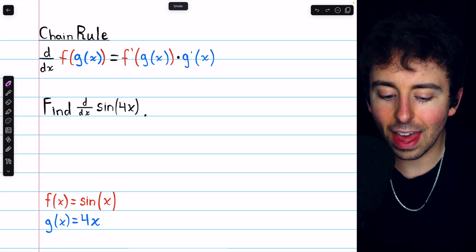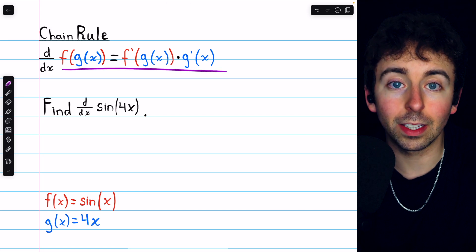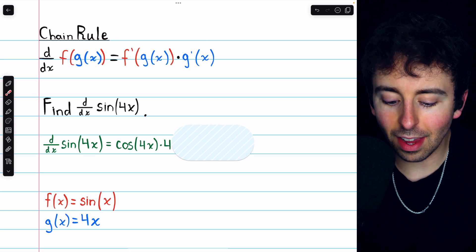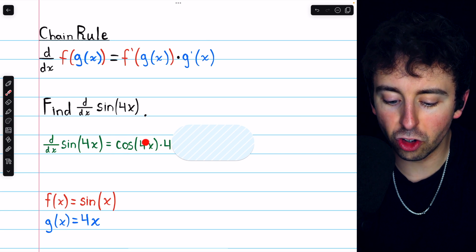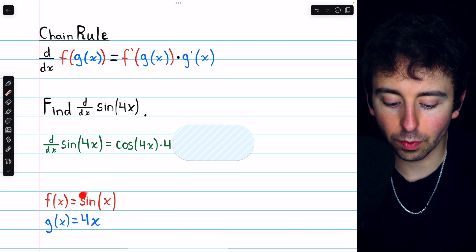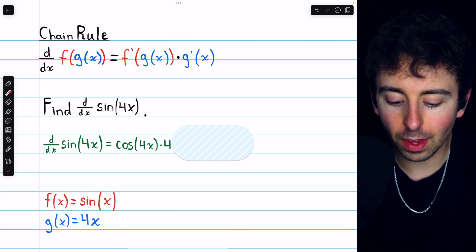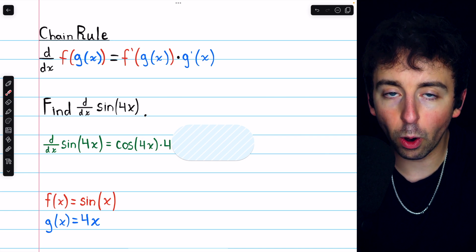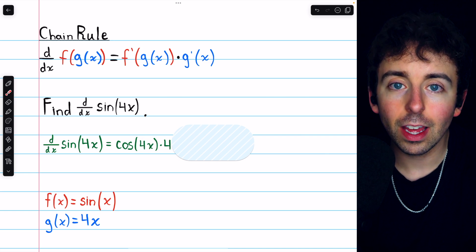Having identified that, applying the chain rule is straightforward. So the derivative of sine of 4x is f prime of g. That's the derivative of the outside function, the derivative of sine, which is cosine, leaving the inside function, g of x, which in this case is 4x, unchanged.